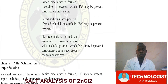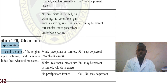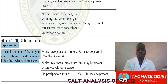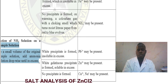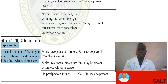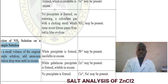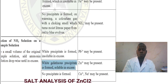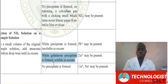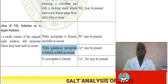Another action in testing solution is testing using ammonia solution. Take a small volume of sample solution X, put it in a test tube, and add ammonia solution dropwise until in excess. The observation will be that a white gelatinous precipitate is formed, soluble in excess. That inference represents that zinc may be present.